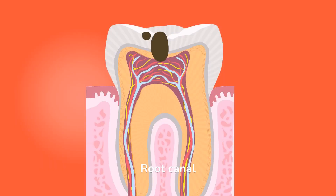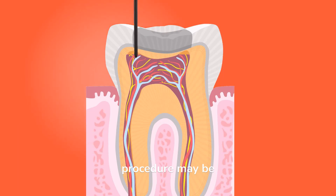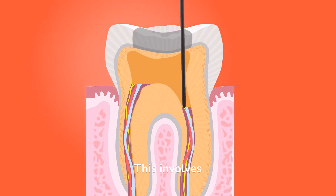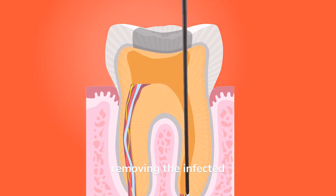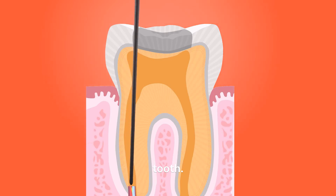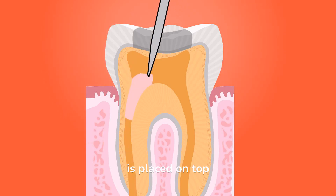Root canal treatment. If the decay has reached the inner part of the tooth, the pulp, a root canal procedure may be necessary. This involves removing the infected pulp and cleaning out the inside of the tooth. The tooth is then sealed and a crown is placed on top to protect it.